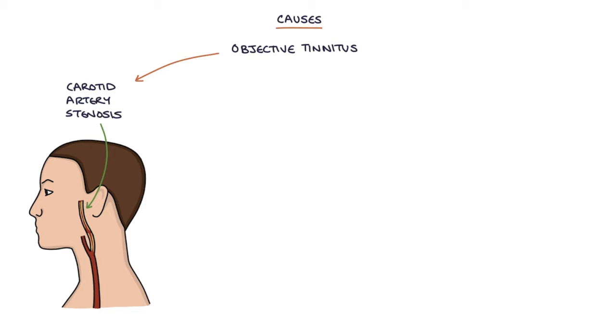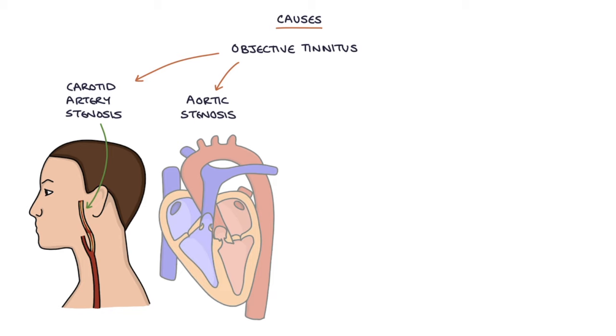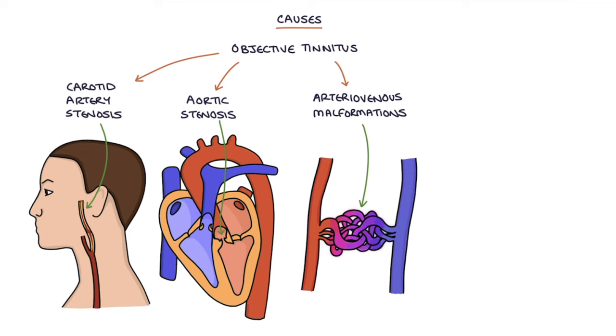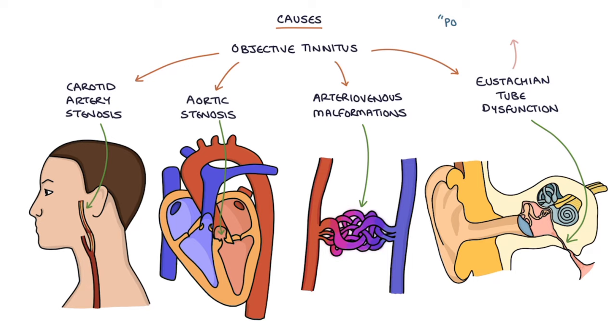Aortic stenosis, where the murmur radiates up into the carotid and up into the neck. Arteriovenous malformations, which cause a pulsatile sound. And eustachian tube dysfunction, which typically causes popping or clicking noises.